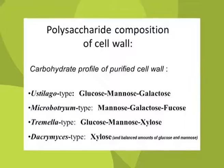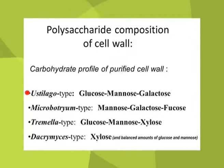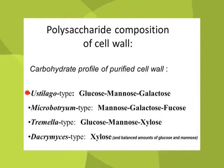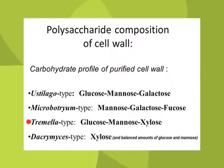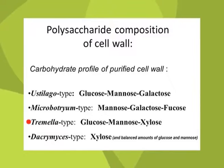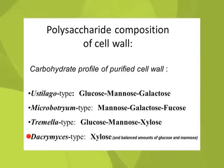On the basis of analytical data from purified cell walls, four different carbohydrate profiles are recognized. The Ustilago type has maximum glucose with balanced amounts of mannose and galactose. The Microbotryum type has mannose higher than galactose and fucose. The Tremella type has maximum glucose with moderate mannose and galactose. The Dacrymyces type has predominant galactose with some glucose and mannose.